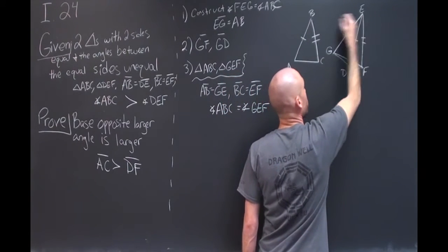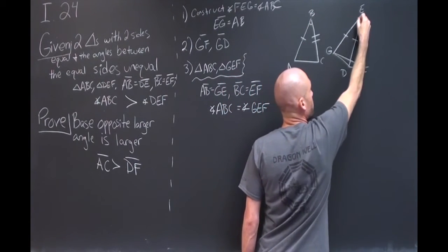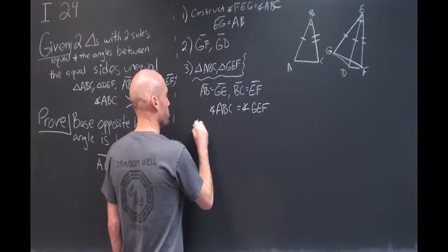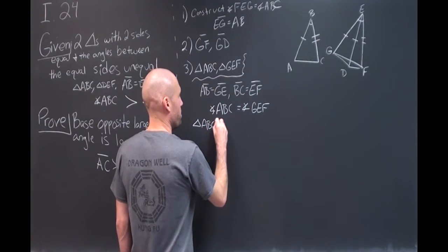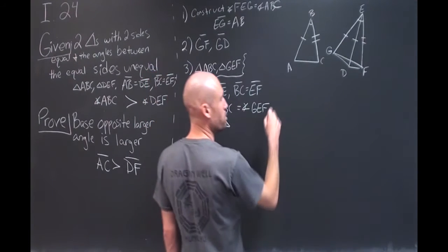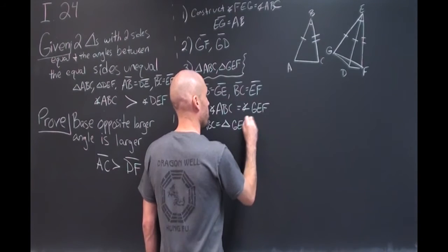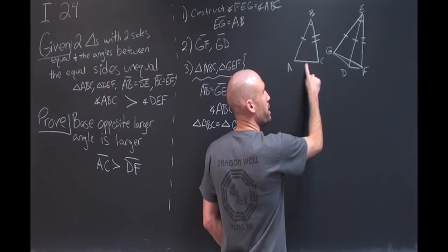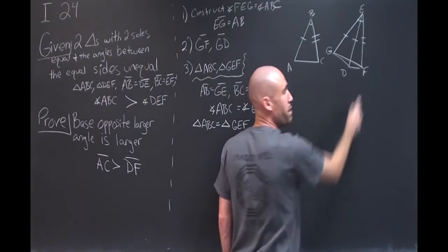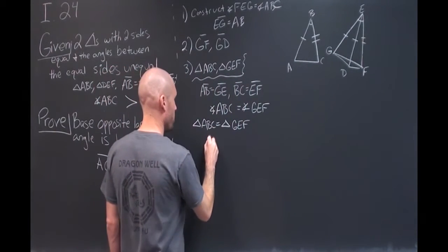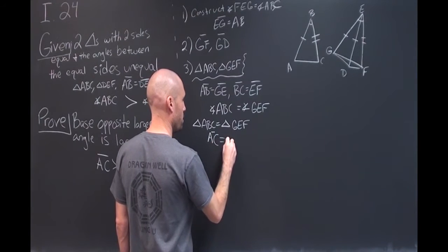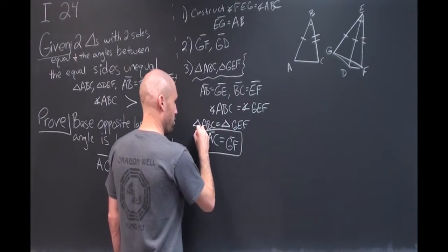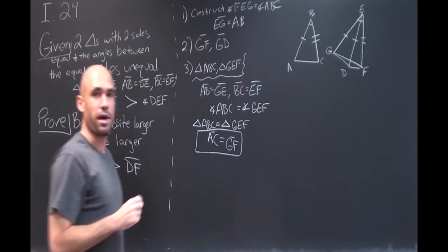And the big takeaway we want from that is we want to be able to say that the base AC is equal to the base GF. We're going to use that to compare it later. So we'll box that one off because we're going to want to return to that pretty soon.